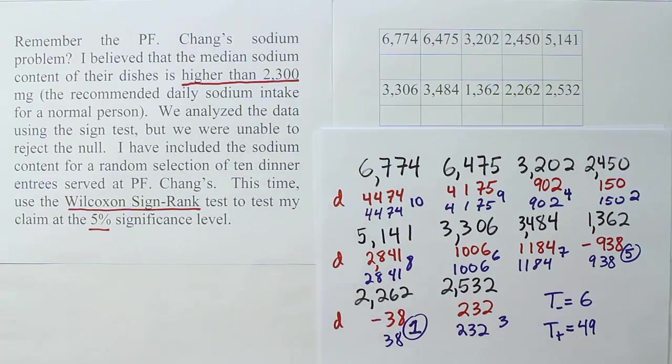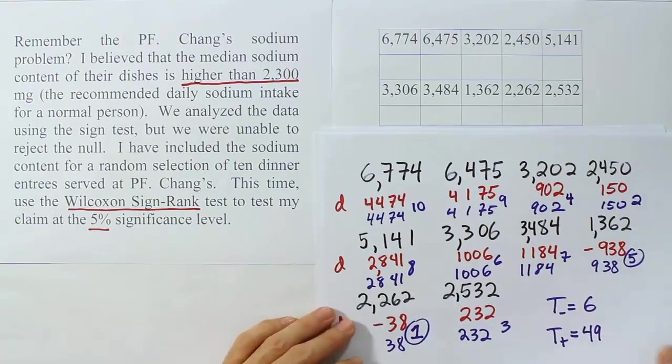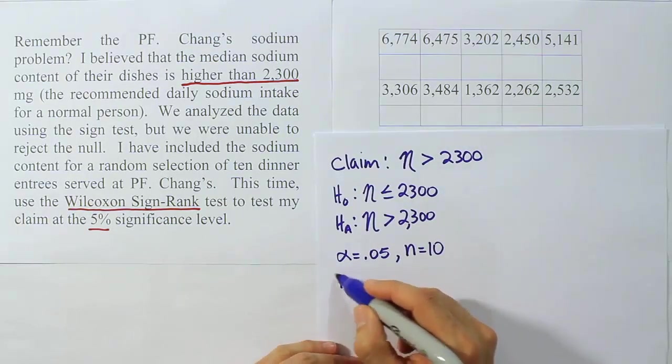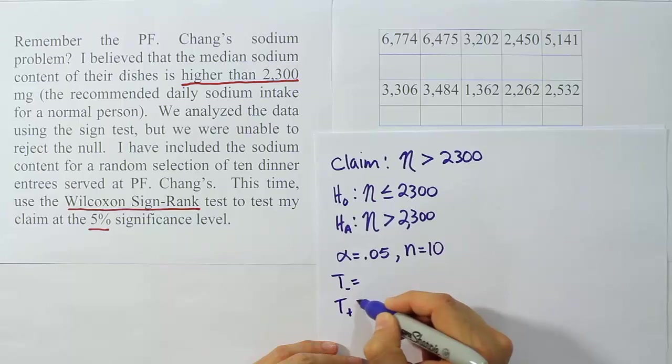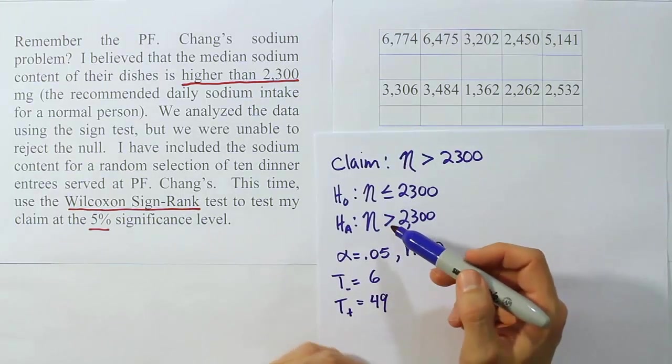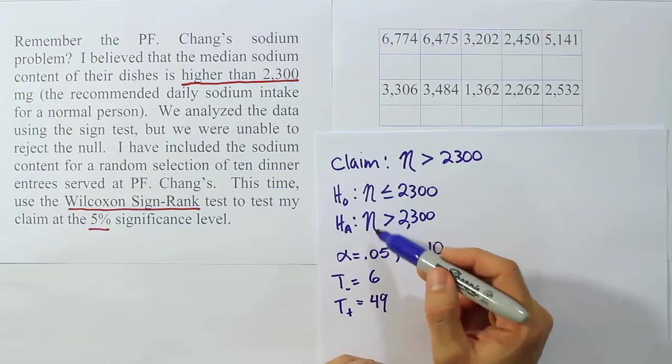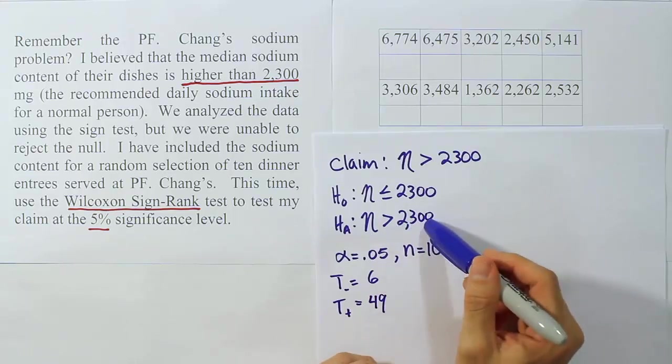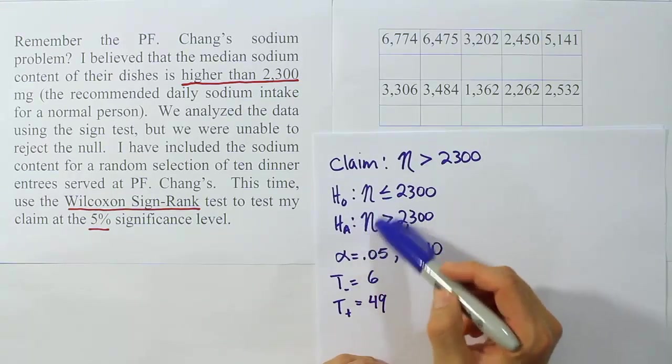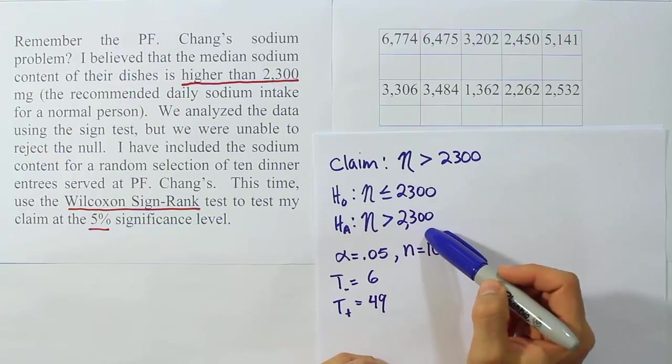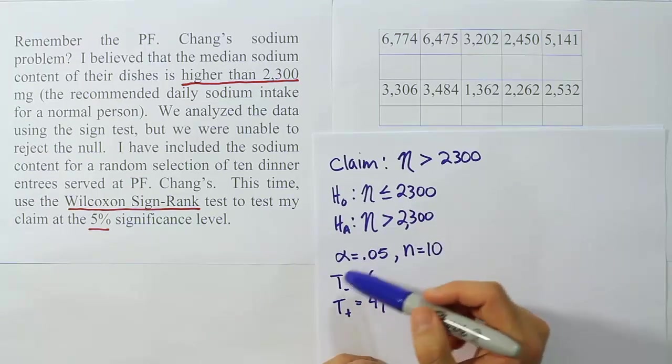Now, let's go back and take these results and put them on our workspace so we know what our test stat is supposed to be. So T negative is 6, the rank total for the positive ranks was 49. Now we have to look at this notation. The H_A is saying that the η is greater than 2300. If the median sodium content of the PF Chang meals is greater than 2300, then when we do all the subtraction, we should get a lot of positive ranks.